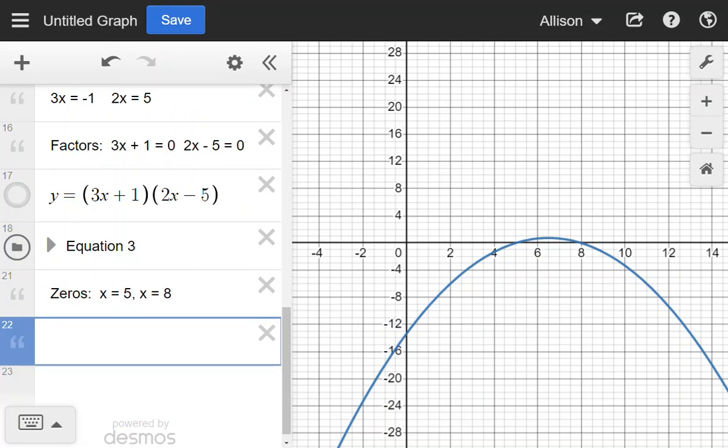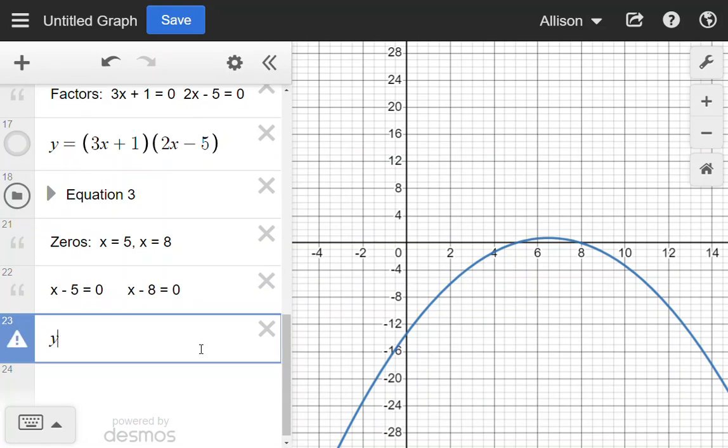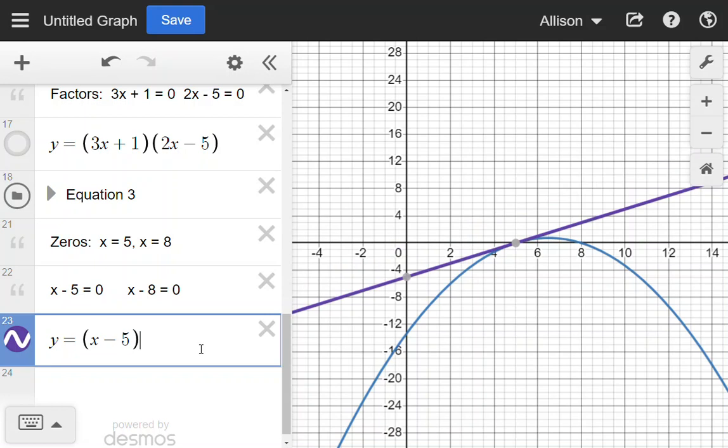Subtracting the 5 will give me x - 5 = 0. And subtracting the 8 will give me x - 8 = 0. Trying to move this value on the other side. It's positive, so I'm going to subtract it over. Same thing over here. Subtracting the 8 over. So we have factors.